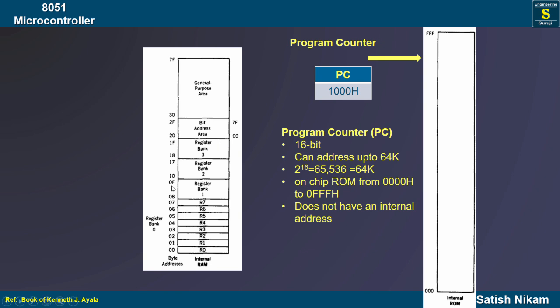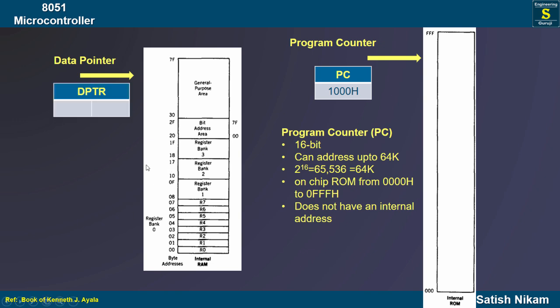Similarly, we have RAM memory to store data. RAM is also called data memory — it is a memory from which we can read data and to which we can write data. The on-chip RAM is 128 bytes, meaning 128 memory locations, and on each memory location we can store 8-bit data. To point to which memory location to pick up data from or store data to, we have one special purpose register and that is the data pointer — in short, we call it DPTR.